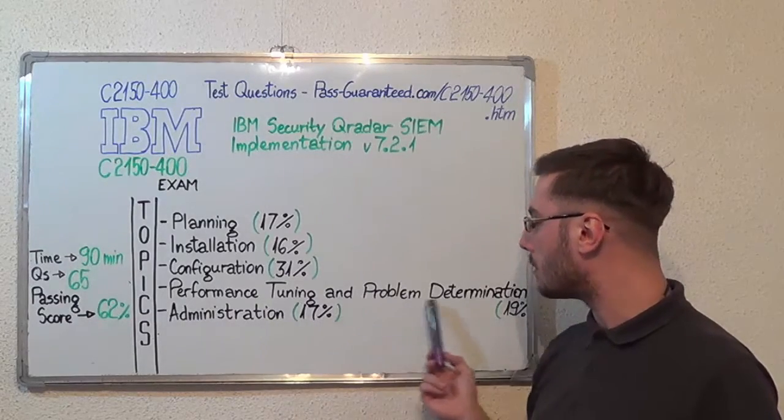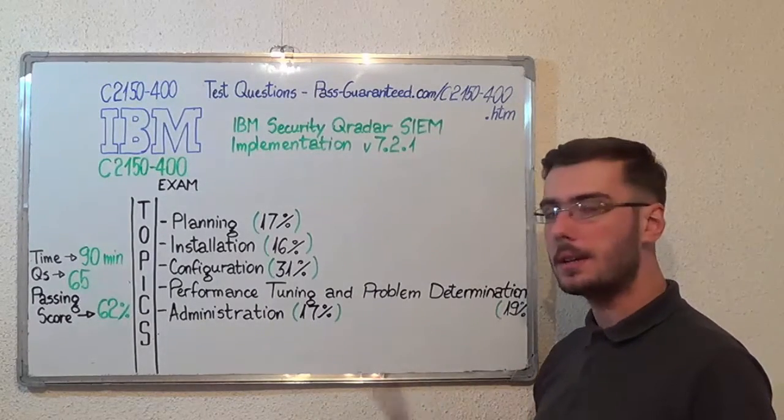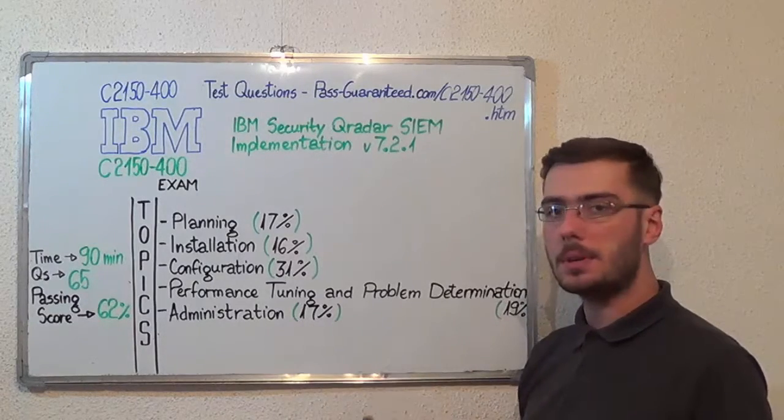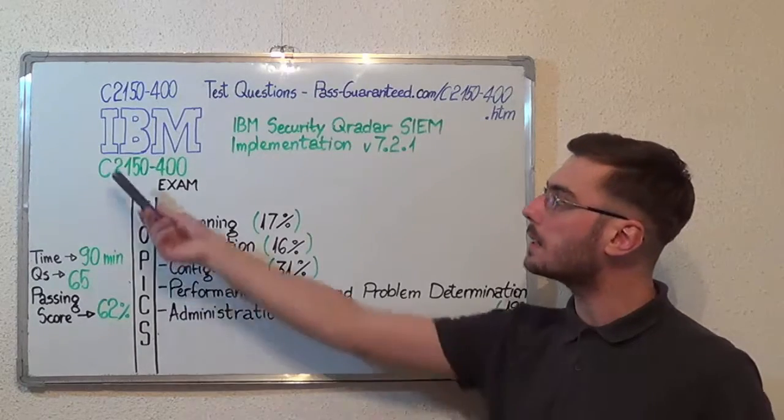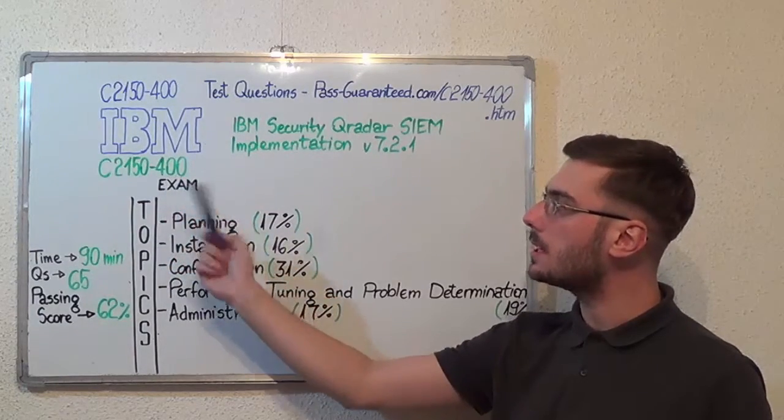Next, performance tuning and problem determination with 19%, and the last one, administration with 17%. You can visit PassGuarantee.com to successfully pass the IBM C2150-400 exam.